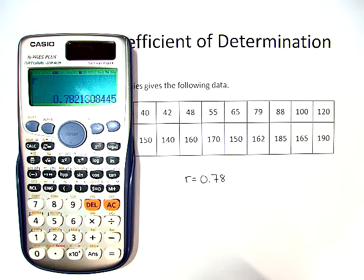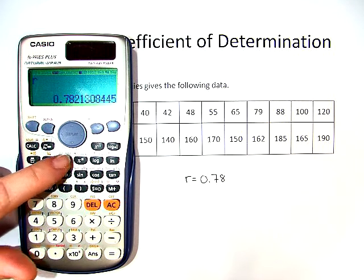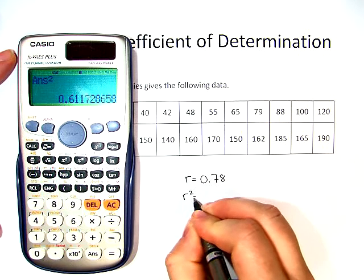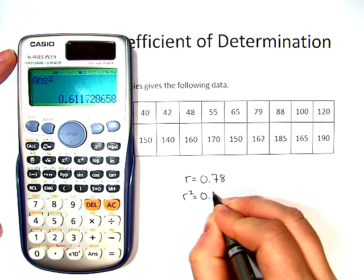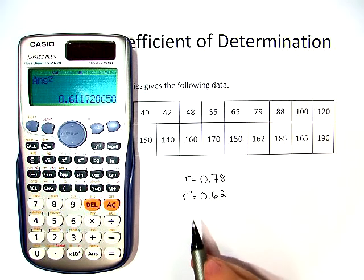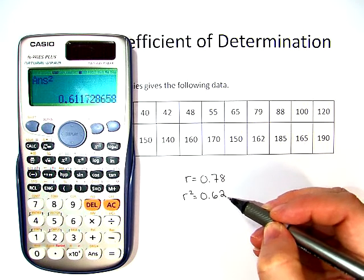But now, we need to do r squared. Just like when you did standard deviation and variation, all you have to do is hit this x squared button. And we get that r squared is 0.62. On our line, anything past 0.5 is considered a good fit.